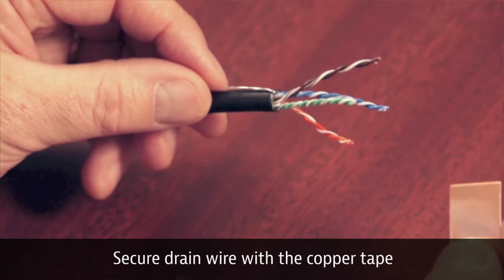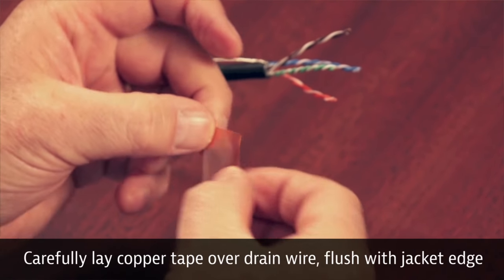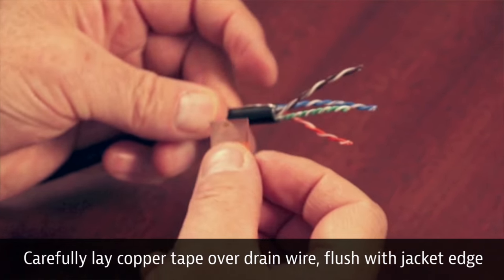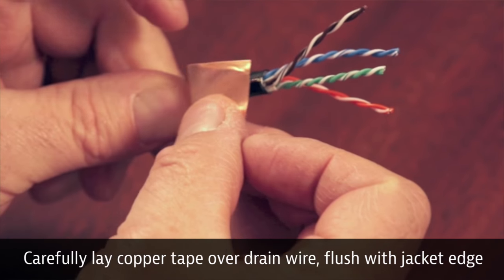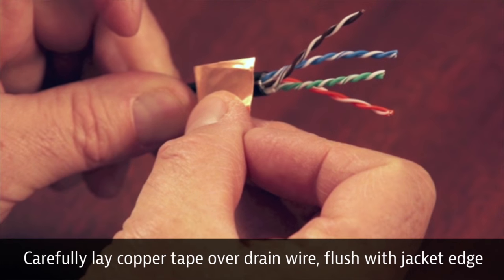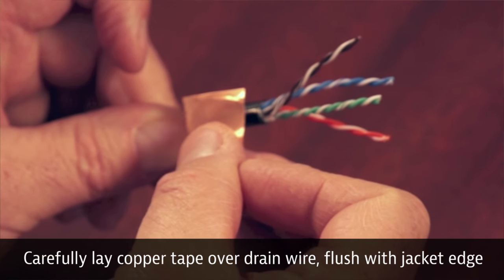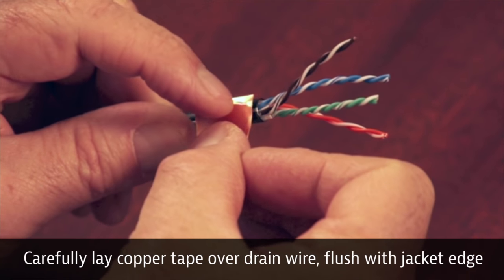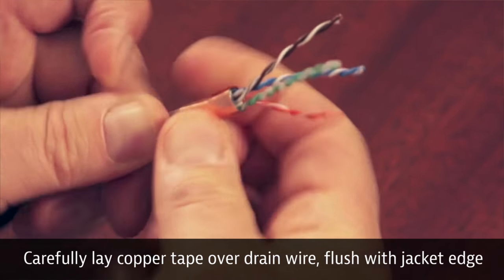I'm going to peel off my copper tape. I want to be careful not to cut my fingers - copper tape can cut also. I want to lay this copper tape over the drain wire and flush with the end of the jacket. I don't want to go over the end of the jacket because that copper tape edge can be sharp and cut into the insulation of the conductors. Line it up and rotate it around to give it good coverage.